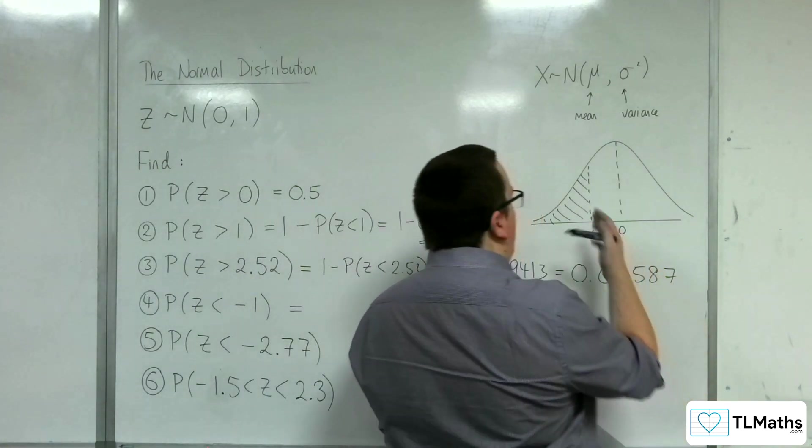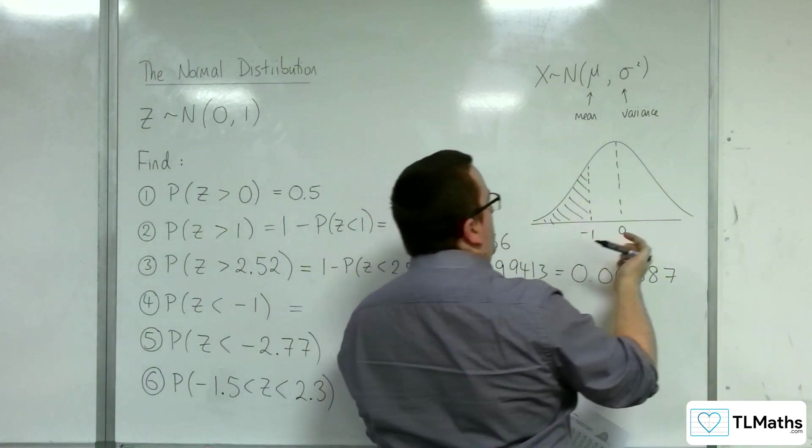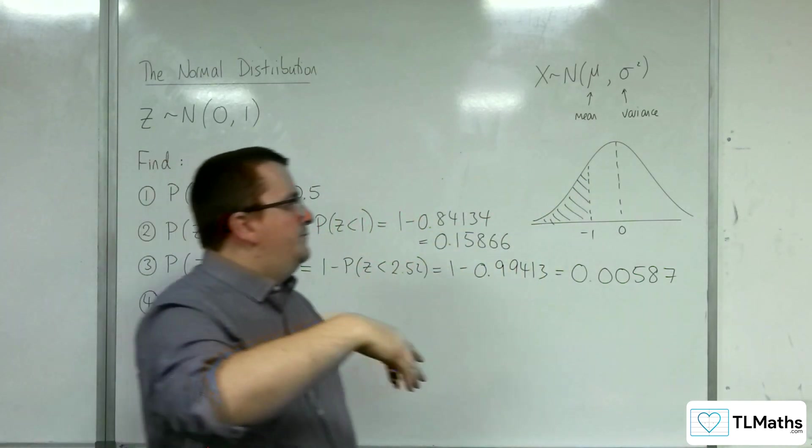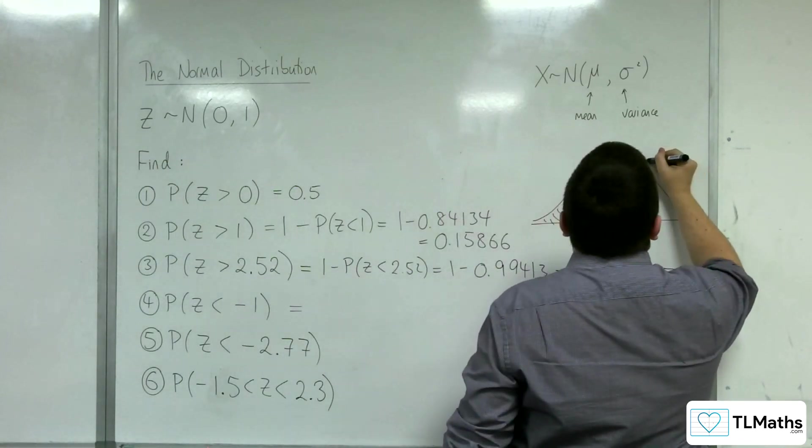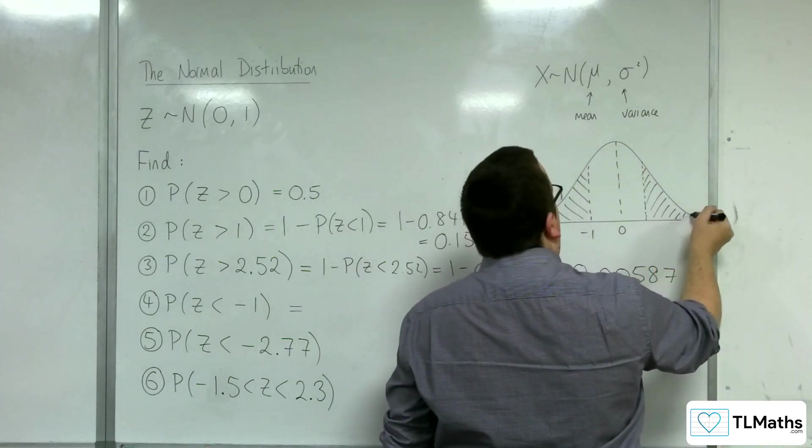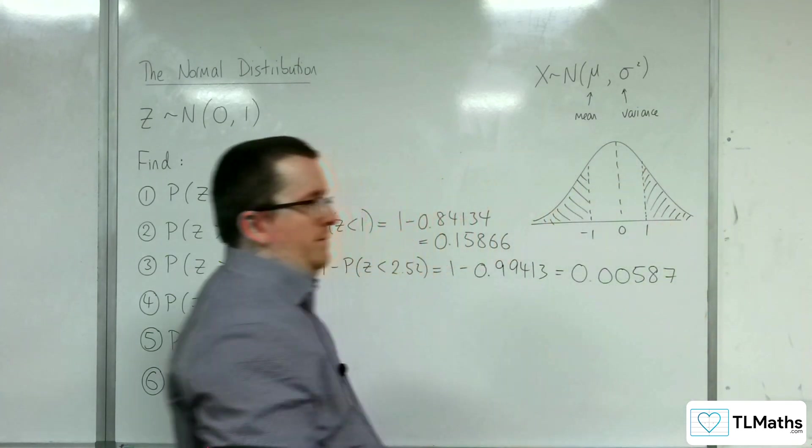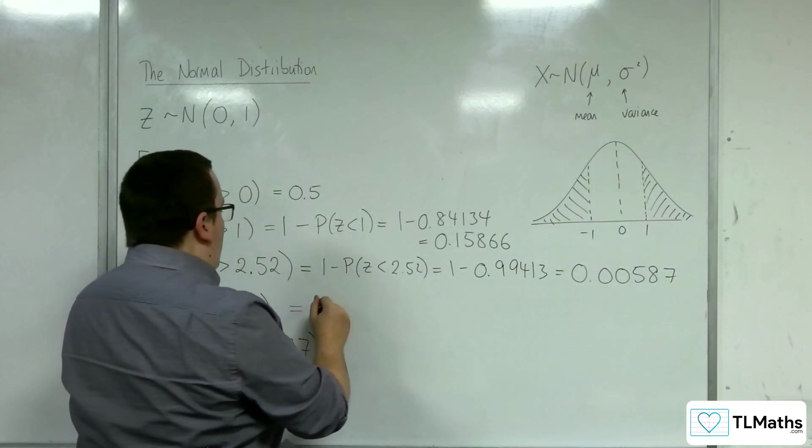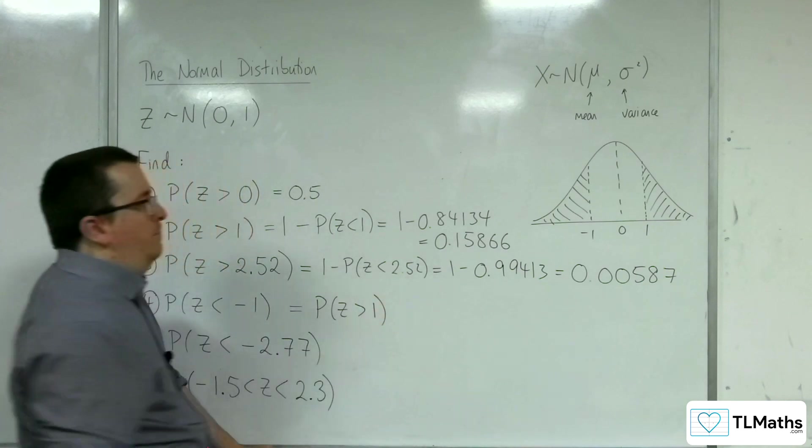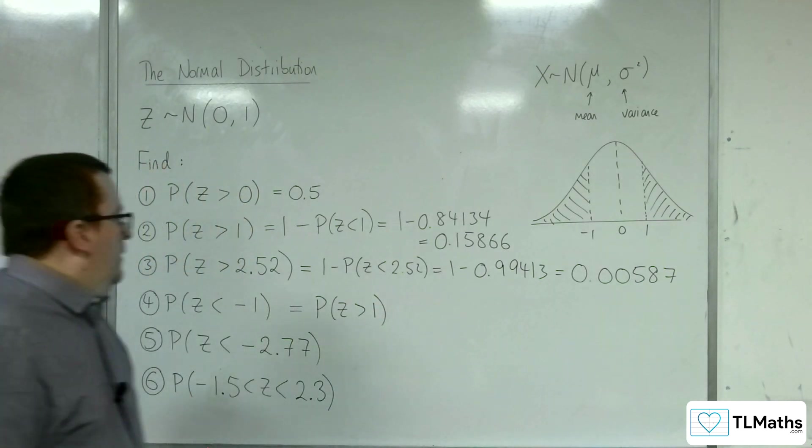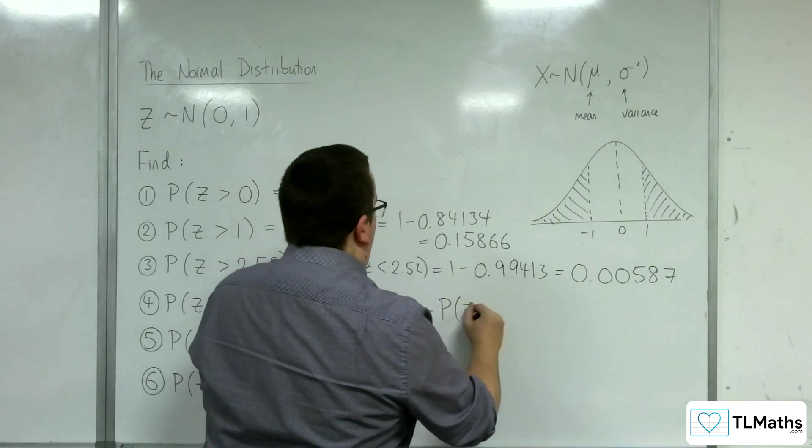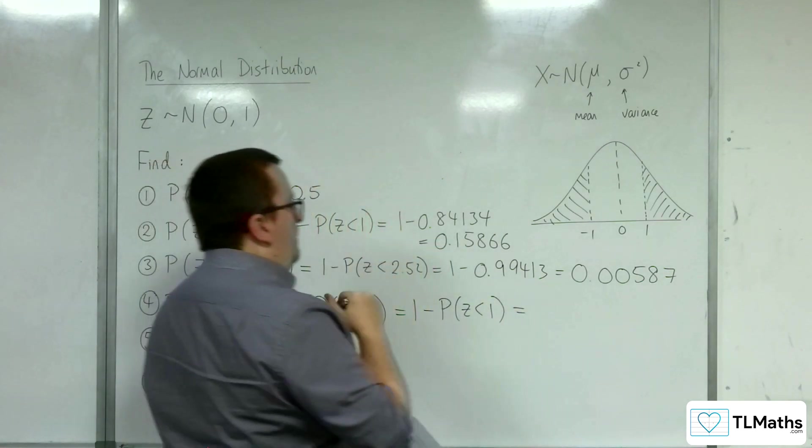Like I didn't have any greater thans, I don't have any negative values. So how can I work this out? Well, the probability of Z being less than minus 1, that region, because the diagram, the model, is perfectly symmetrical, actually that area is precisely the same as that area. So that is exactly the same as the probability of Z being greater than positive 1.